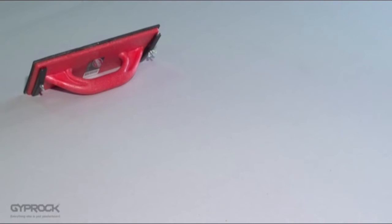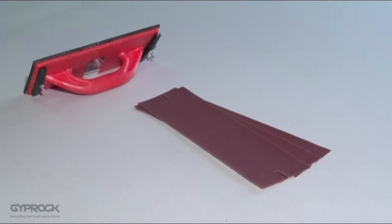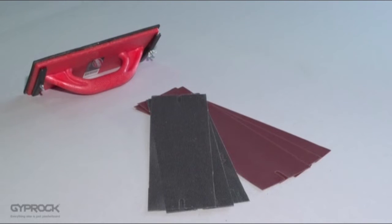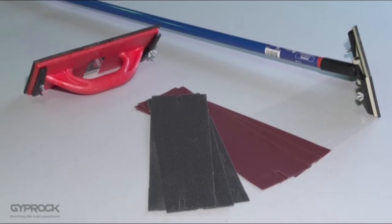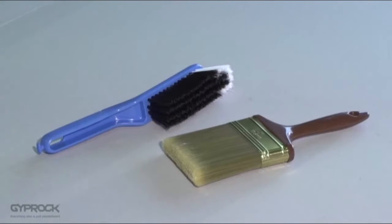You'll also need a sanding float, either 150 grit sandpaper or 220 grit sanding mesh, a pole sander or working platform for ceilings. If you're only working on a small repair project, a sanding block will do the trick, and a soft brush or cloth. So let's get sanding.